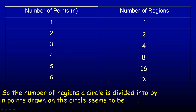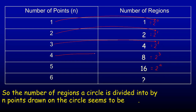So the question is: what would the next number be if we drew a circle and joined six points together? If you look at each of these numbers — the number of regions — they're actually powers of two. One is two to the power of zero, two is two to the power of one, four is two squared, eight is two cubed, and 16 is two to the fourth. Notice the number of points is always one bigger than the exponent — so the exponent is always one less than the number of points.